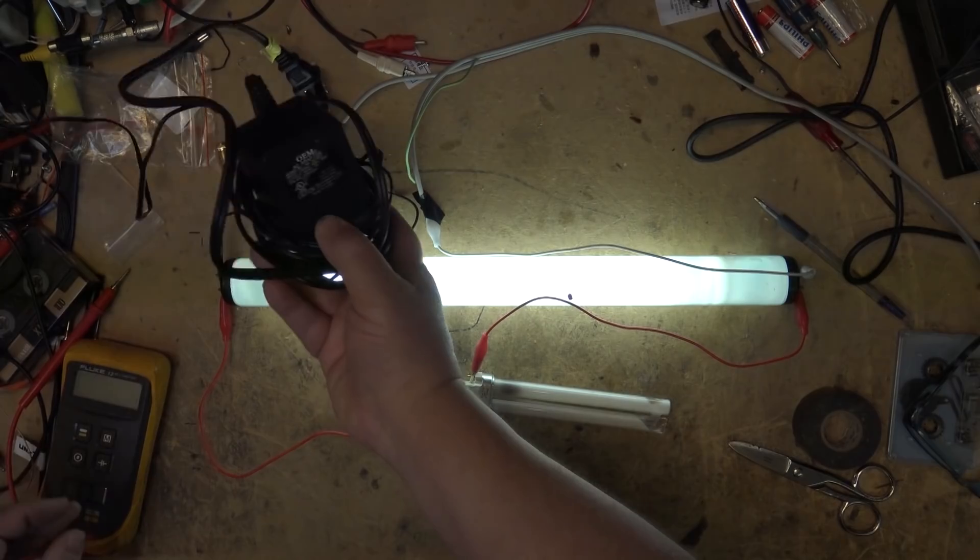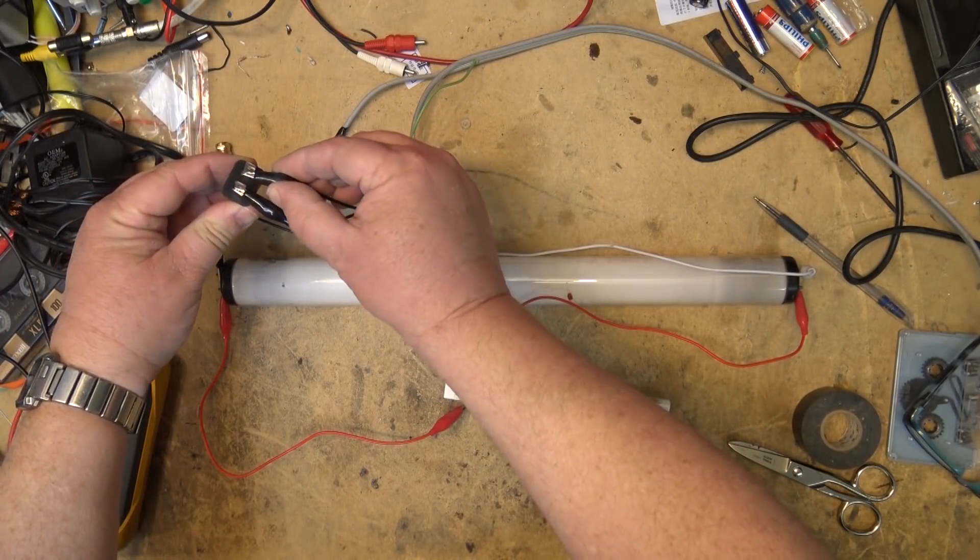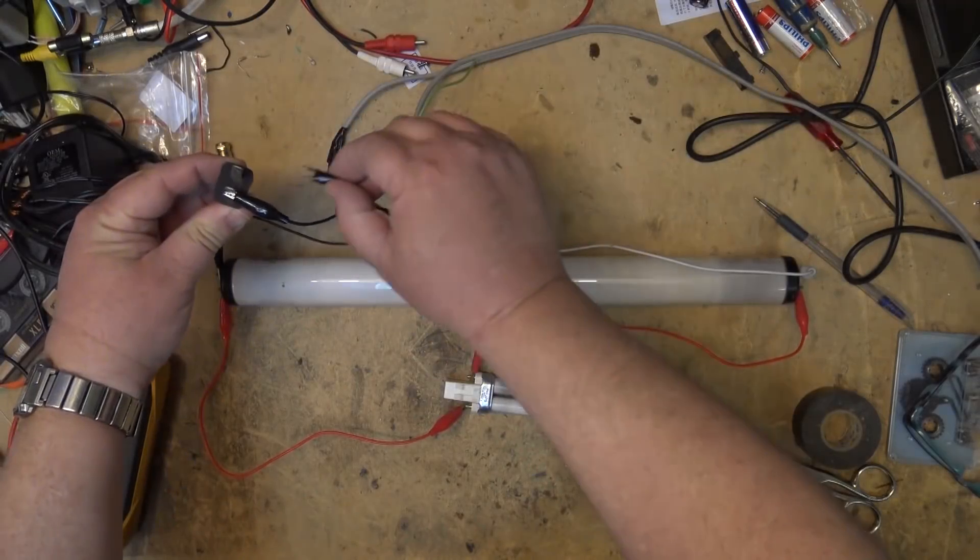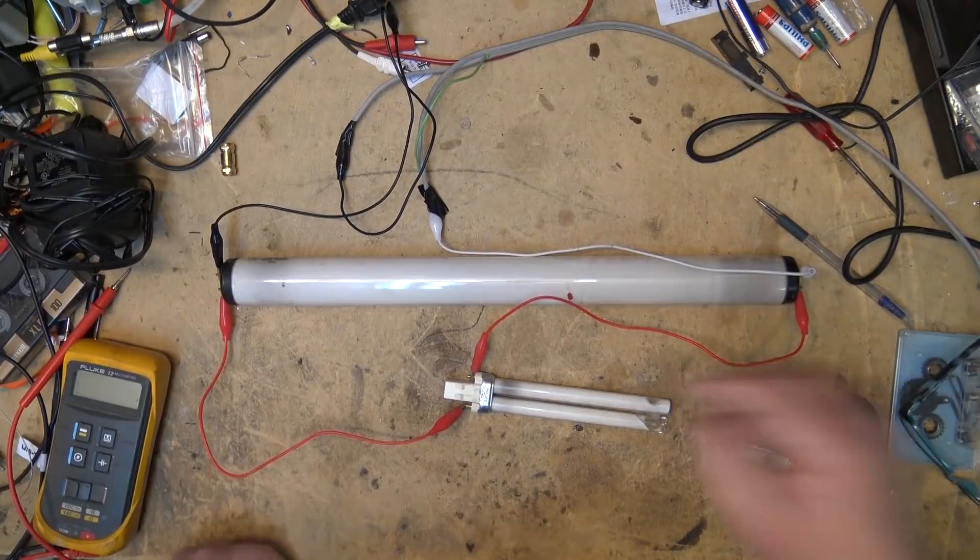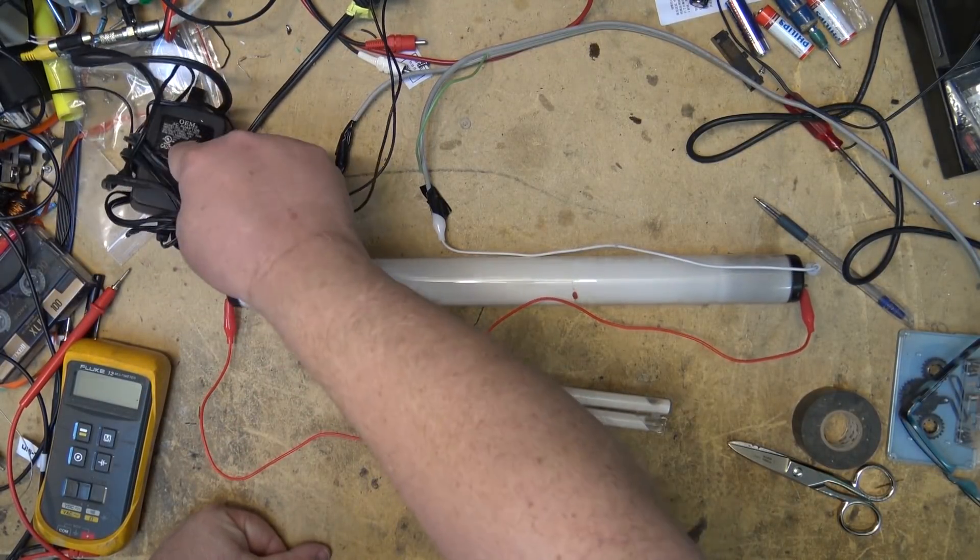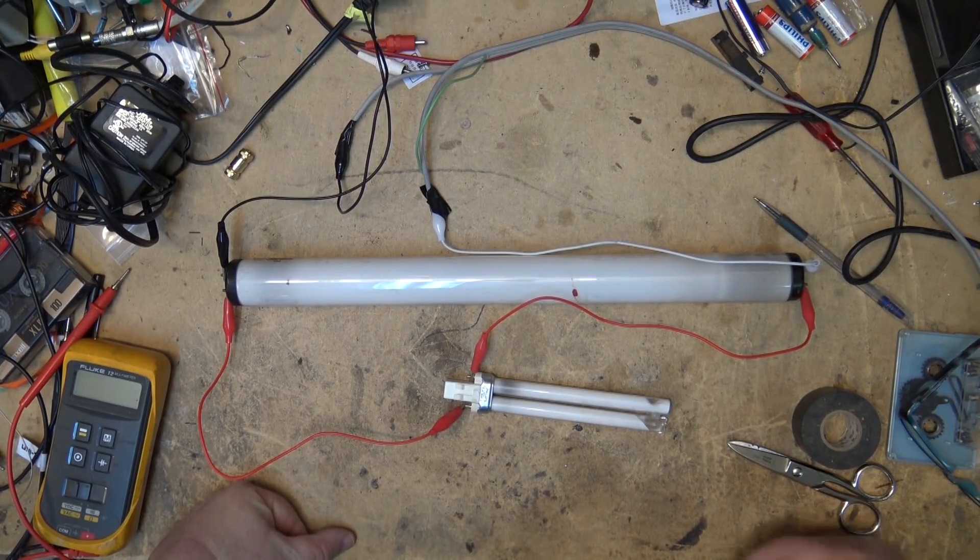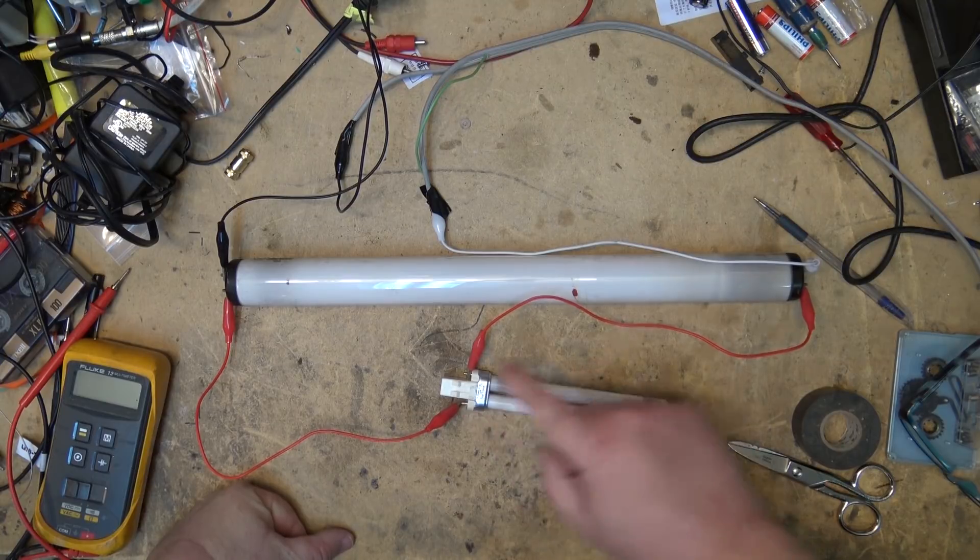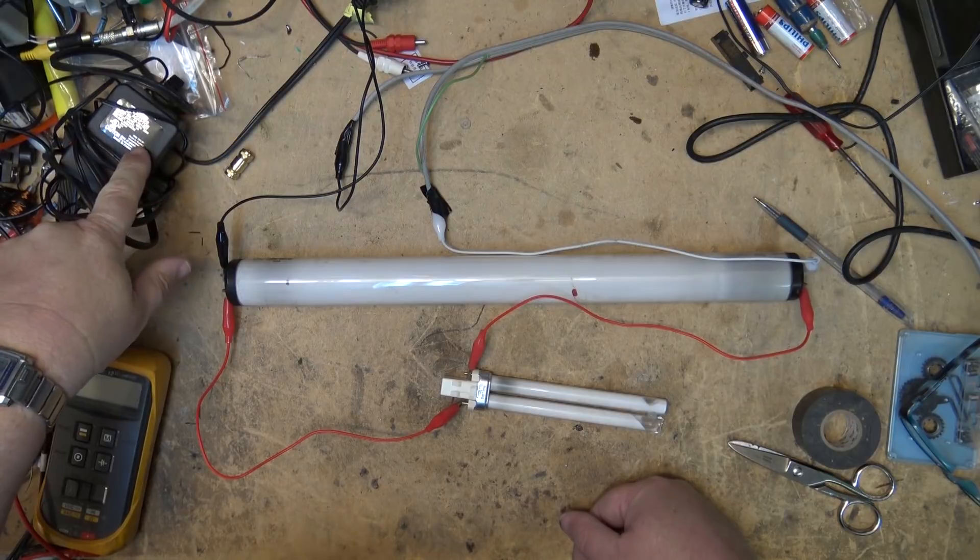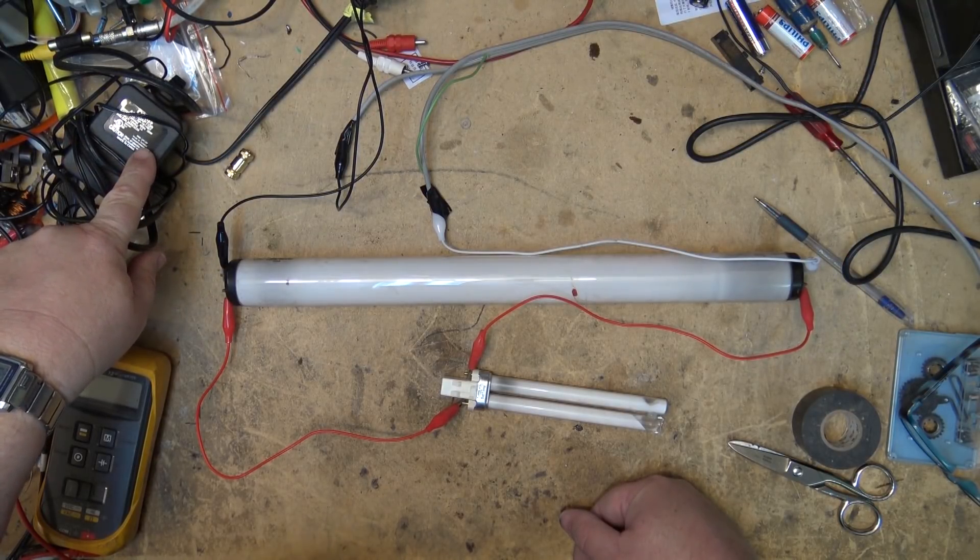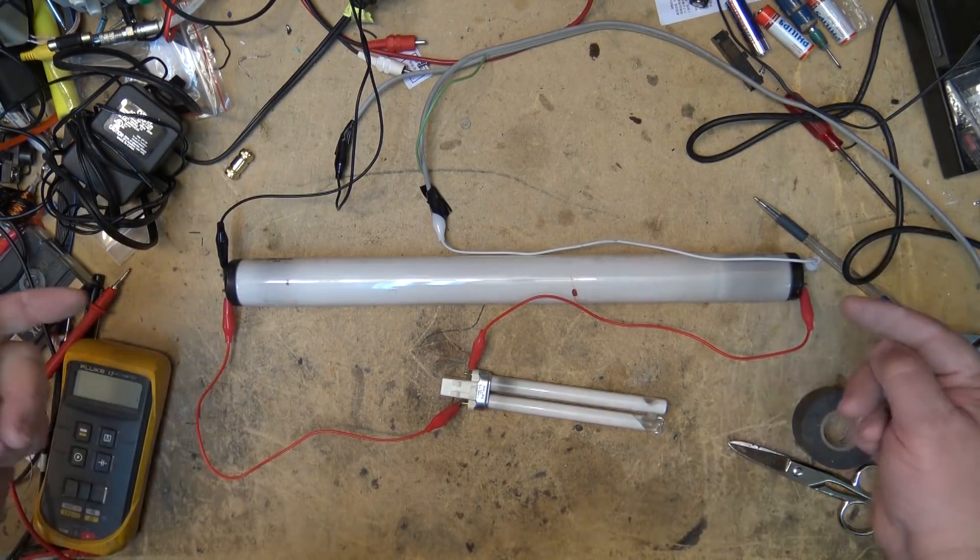Now, what is happening here is the primary core or the primary winding in here is just acting like a big choke coil. What happens is when the switch closes here, it heats the filaments up in the end of the lamp. It also builds up a magnetic field in the primary of the transformer. And then when the switch opens, that magnetic field collapses and it gives you a kick.